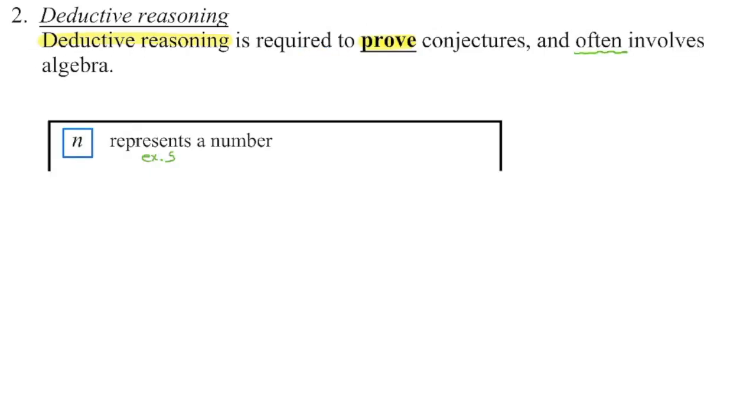The transitive reasoning is required to prove a conjecture. It's often going to be set up using algebra. Algebraically, we can choose any variable to represent a number. I went with the variable N for number.